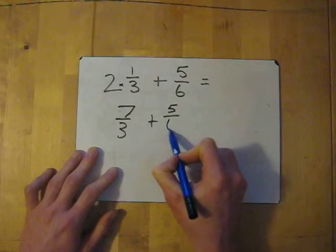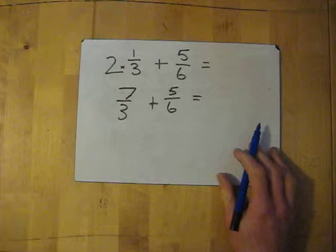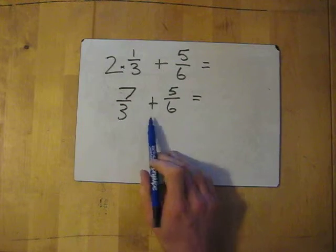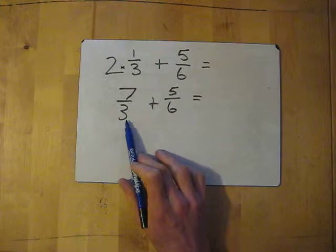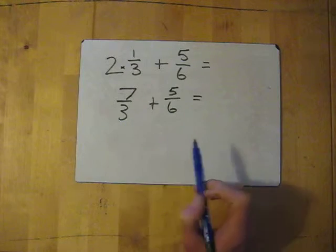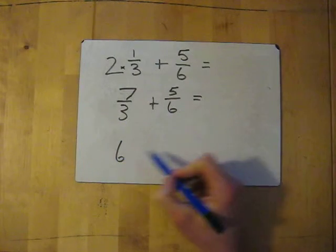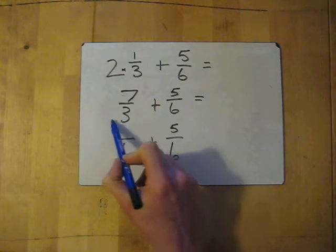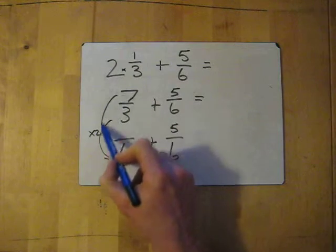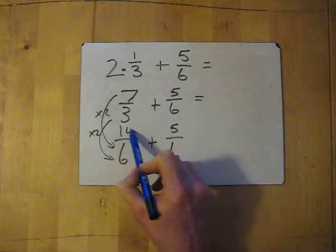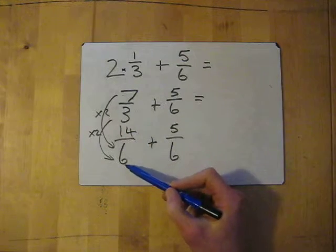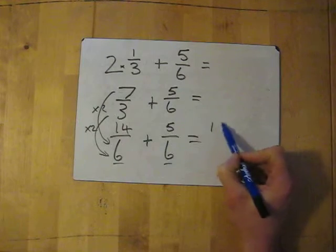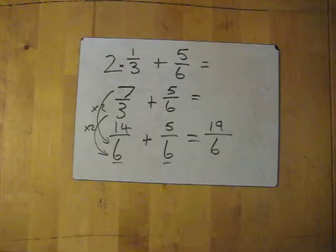So now we've got seven over three, add five sixths. This looks a lot easier than the original mixed number question. Now we need to find the common multiple between three and six. Three times tables are in six as well — two times three is six — so our common multiple is six. This fraction is already over six, so we leave it. To get from three to six we multiply by two, so we times the top by two: fourteen over six. Now we've got the same denominator, so we just add the tops: fourteen plus five is nineteen. So the answer is nineteen over six.